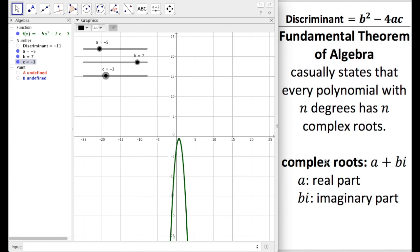Well, let me remind you about the fundamental theorem of algebra. It casually states that every polynomial with n degrees has n complex roots. Now, what the heck does that mean? The degree of a polynomial is the largest exponent, or the largest exponent in a quadratic is a square. Is that two? So we have two degrees. So if I have two degrees, that means I must have two complex roots.